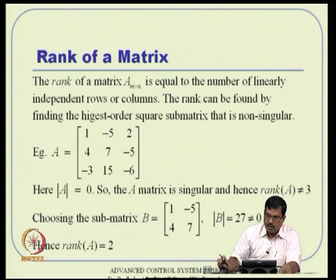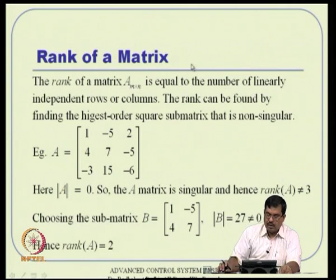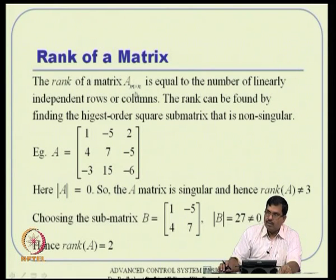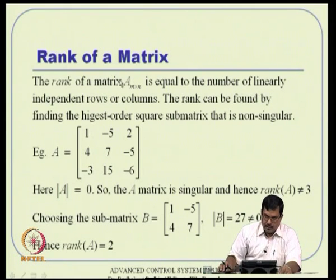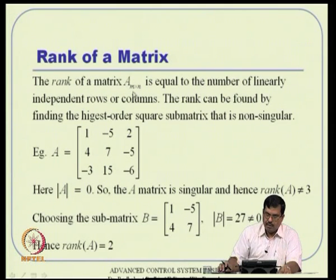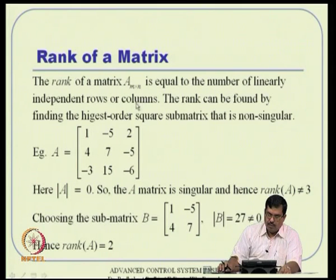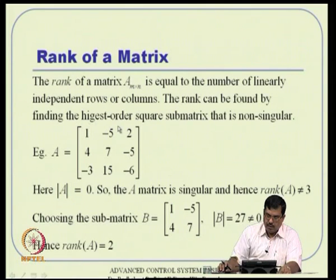The next concept is the rank of a matrix, which plays a critical role in control theory and numerical methods. For a general rectangular M by N matrix, the rank is equal to the number of linearly independent rows or columns. The rank can be found by identifying the highest-order square sub-matrix that is non-singular.